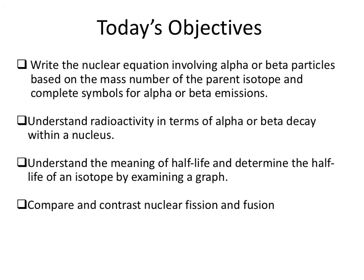After watching this video lecture, students will be able to balance nuclear equations involving alpha and beta particle decay. You'll also be able to identify and diagram what's happening in both an alpha particle and beta particle decay process. You'll be able to identify half-life and utilize graphs to determine half-lives, and you'll be able to compare and contrast nuclear fusion and fission.